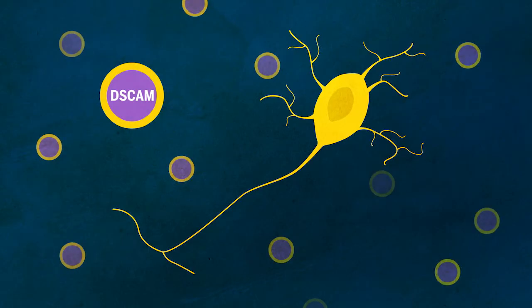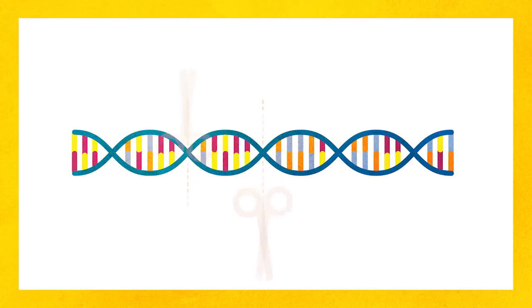In Down syndrome, high levels of a protein called DS-CAM leads to an overgrowth in the brain neurons, causing faulty connections. Researchers can recreate this same problem in flies by manipulating their genes.